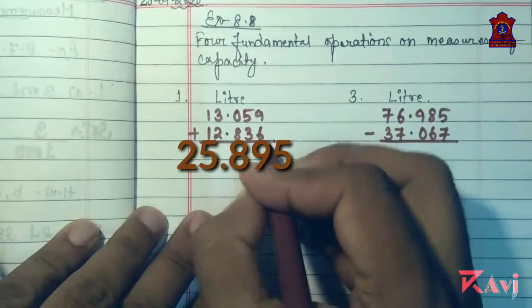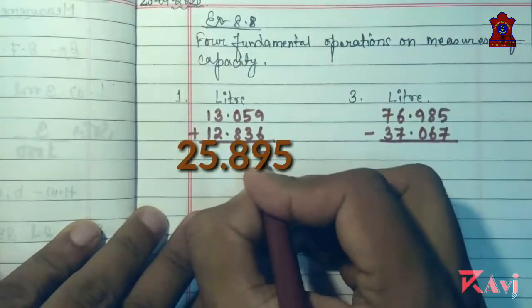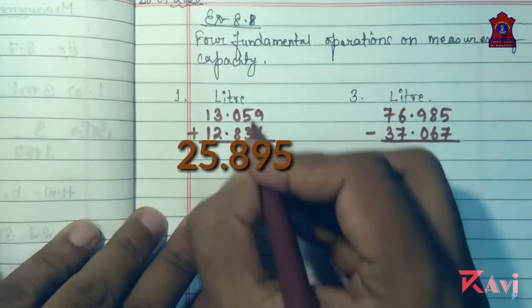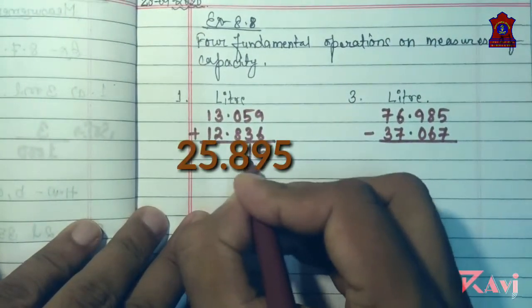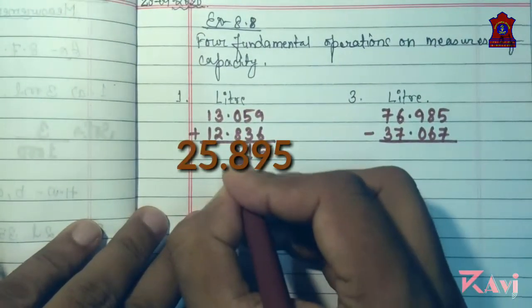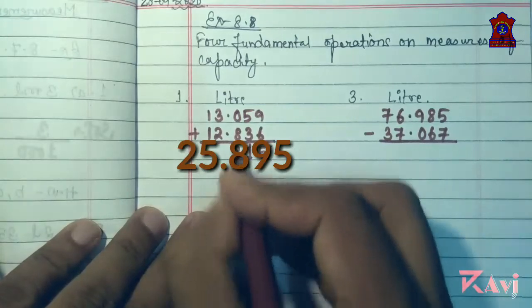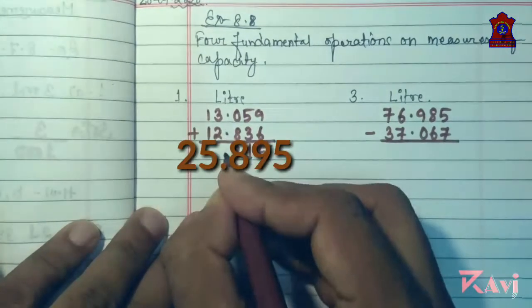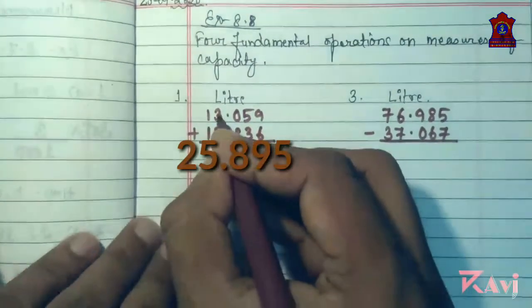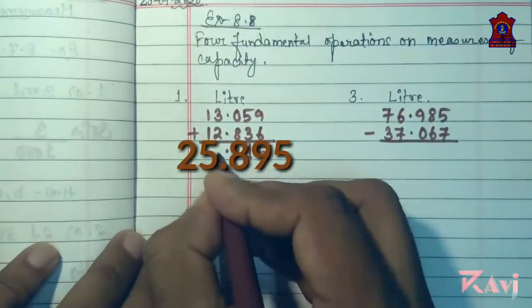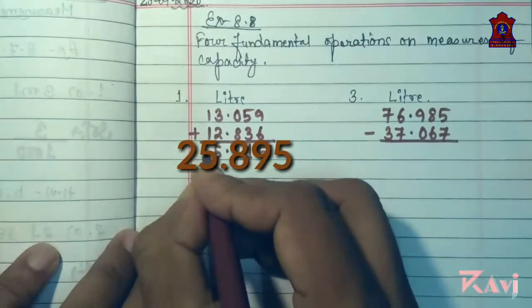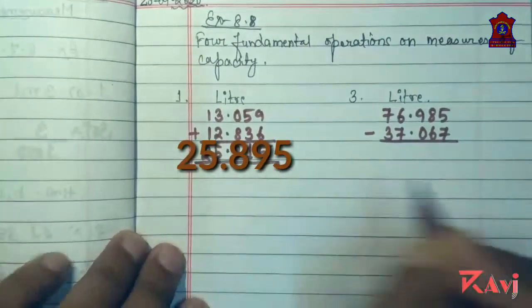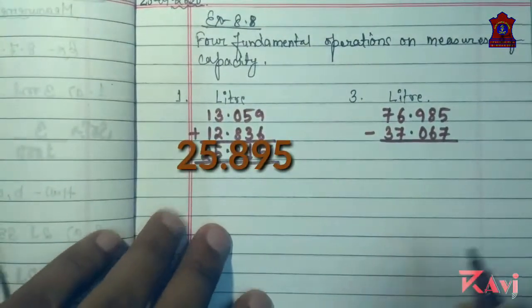9 plus 6 is 15. 5 plus 3 is 8, carry 1, giving 9. 8 plus 0 is 8. Decimal. 3 plus 2 is 5. 1 plus 1 is 2. Like this, you add in your book only.